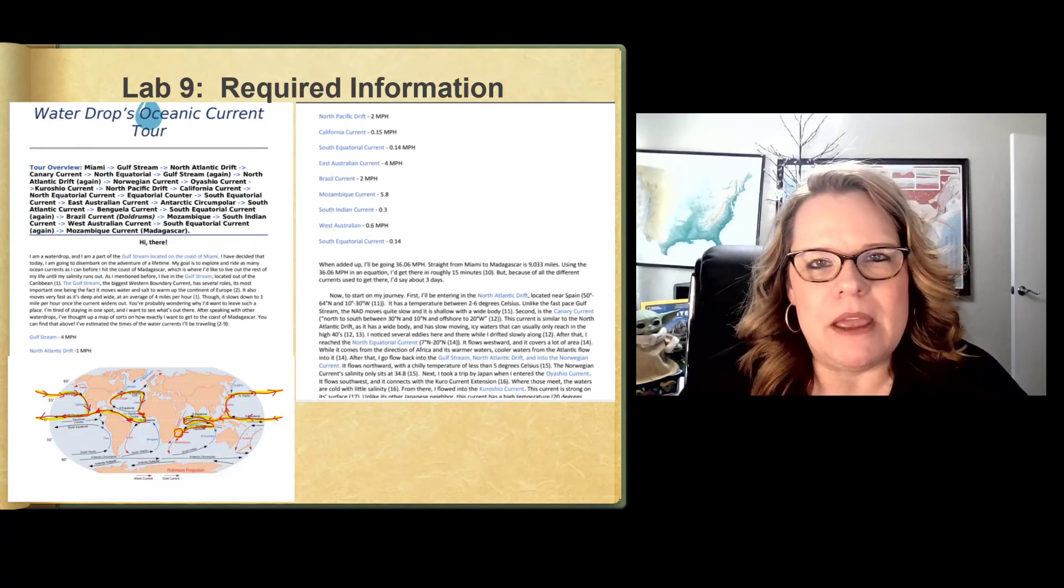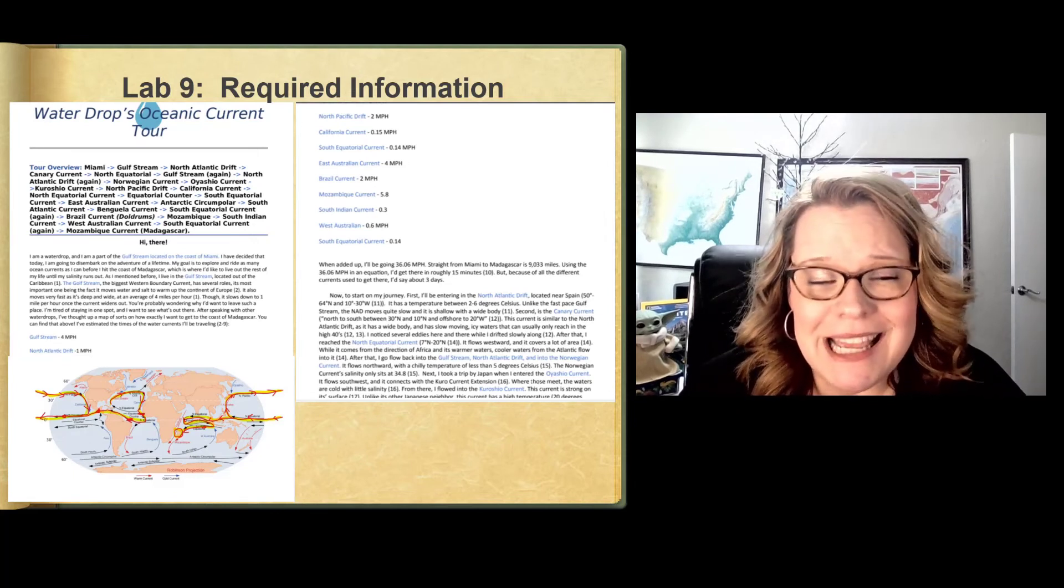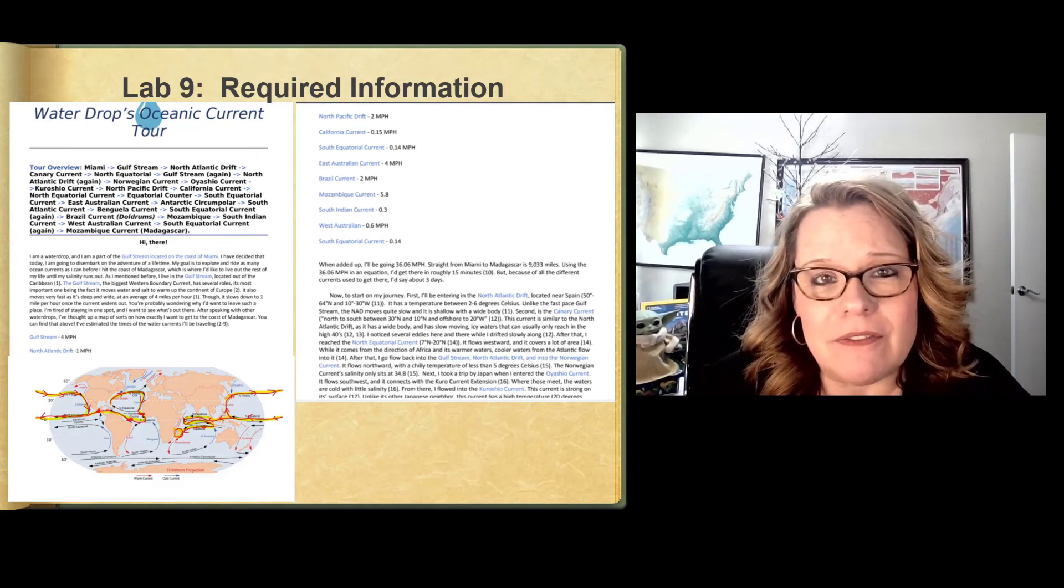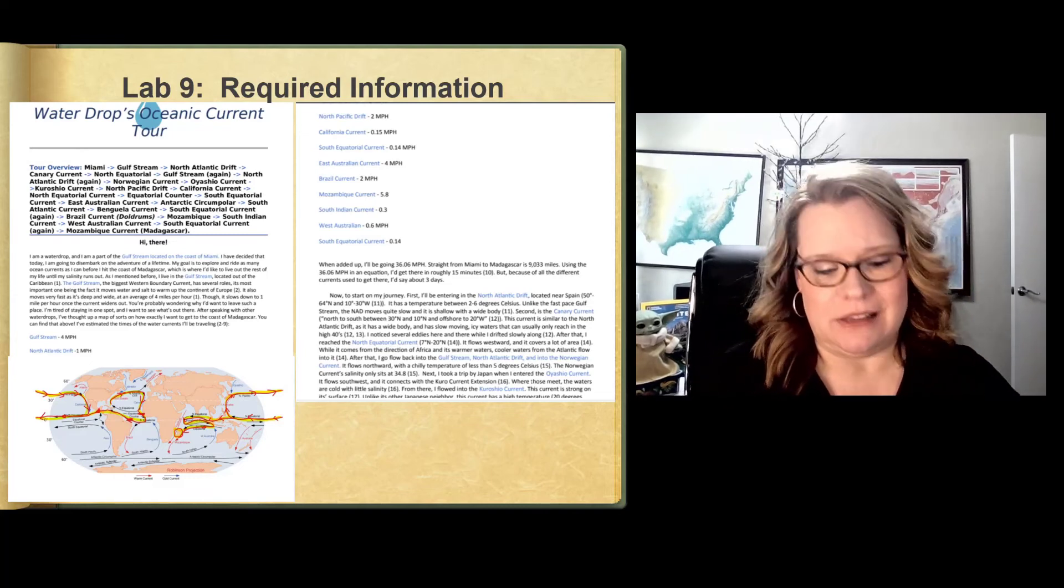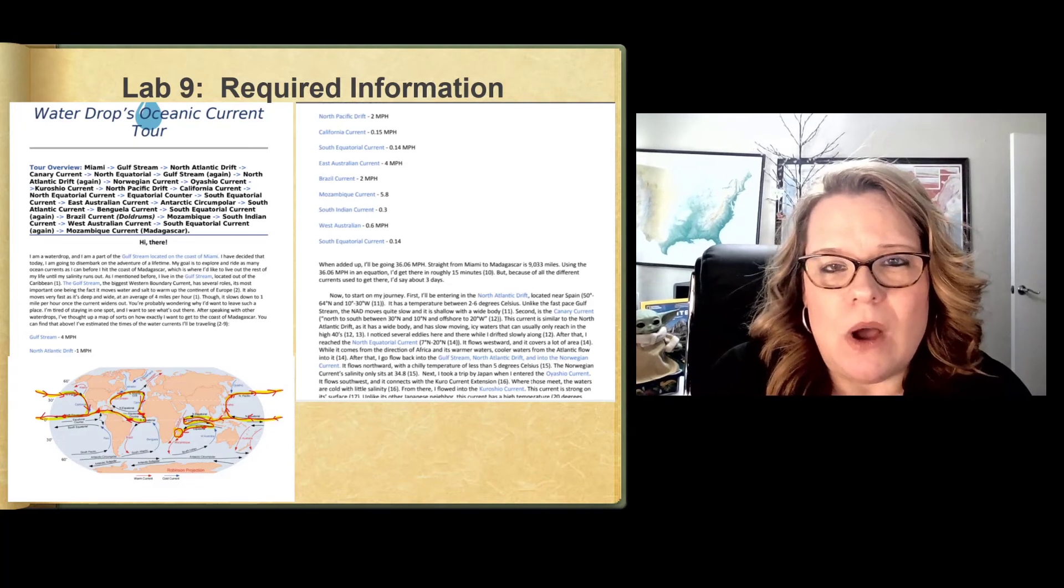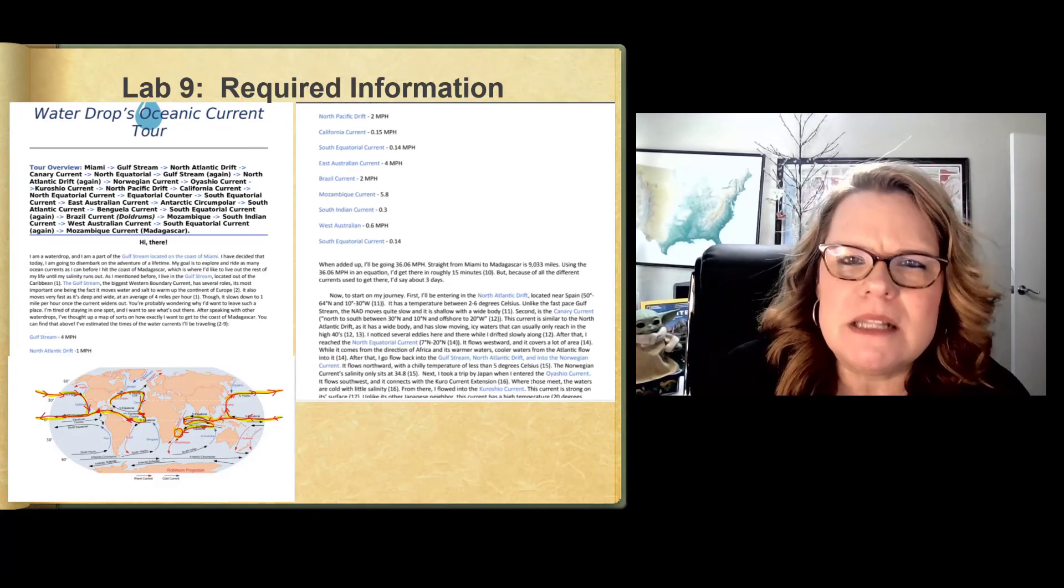So let's say the water droplet ends up in the doldrums. The doldrums are named that for a reason. So they're very slow moving. If ancient ships got stuck in the doldrums, they were there and people died because they didn't have access to food or clean water or fresh water that didn't have salt because they got stuck there for months and months and months.